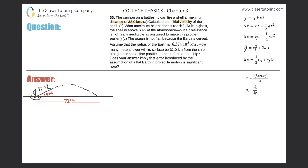Maximum ranges are always obtained at 45-degree angles relative to the horizontal. Anything greater than 45 or less than 45 will lead to submaximal ranges. So keeping that in mind, we do know the degree measure. We know the range and we've got to find the initial velocity.